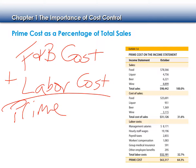Why is it called prime cost? Why do we look at just these two? Everything else besides labor and food and beverage costs — we can't control our rent, we can't control how much we pay for Wi-Fi. We can't control those other expenses, which we'll talk about in the next chapter. But prime costs are our most controllable.